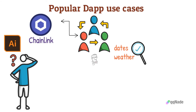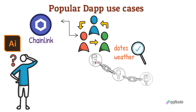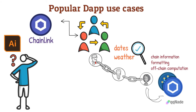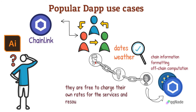Chainlink also enables interoperability, which simply means blockchains communicating with each other. Chainlink uses the LINK token to reward its network users for the work they do — collecting off-chain information, formatting, and other off-chain computation. Network operators can only stake their tokens and are not allowed to sell them. However, they are free to charge their own rates for the services and resources they provide.